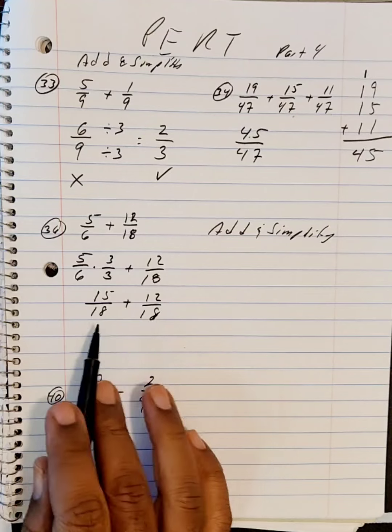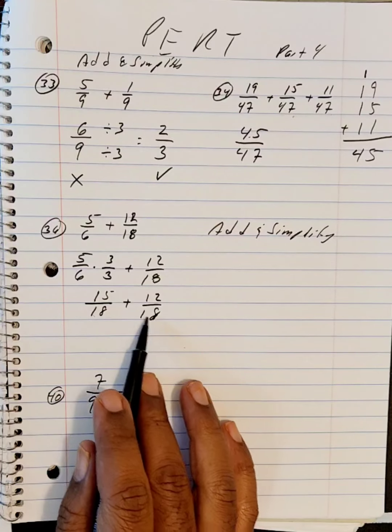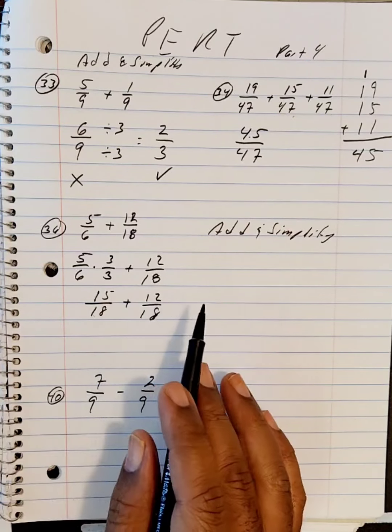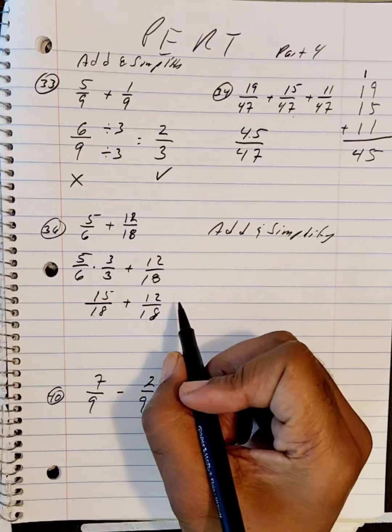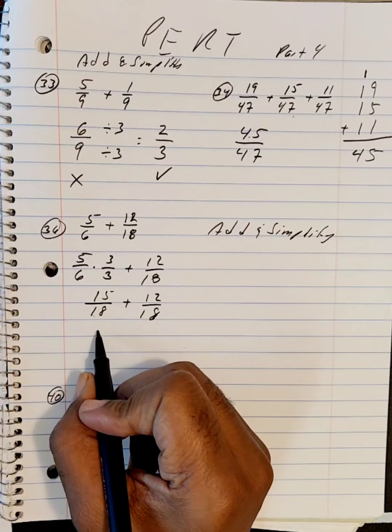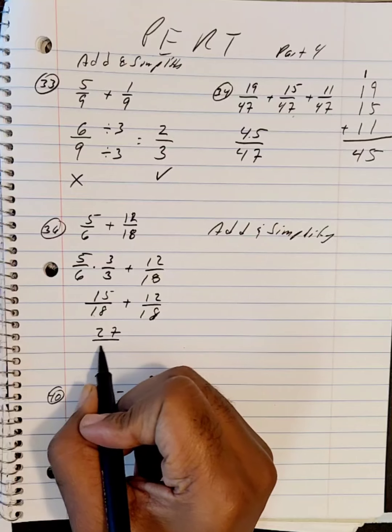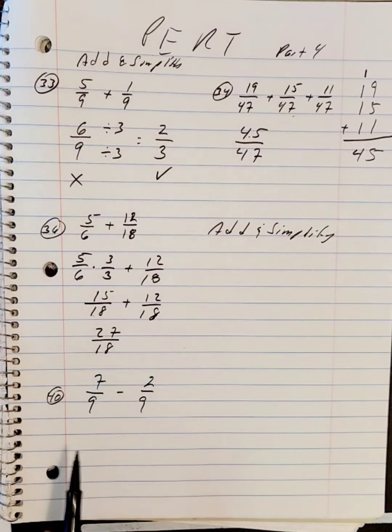And now I can add this together because now they have the same... right, right, bad looking 8... same denominators. So 15 plus 12 can be added, and that will give me 27, and that will be over 18.